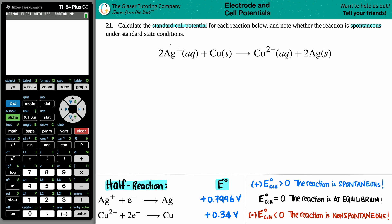Okay, so for this example, we have 2 Ag+ aqueous plus Cu solid equals Cu2+ aqueous plus 2 Ag solid.